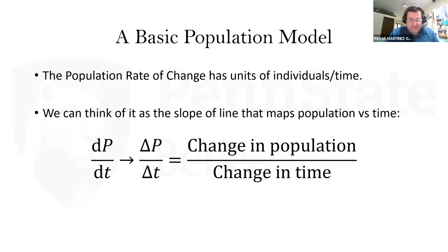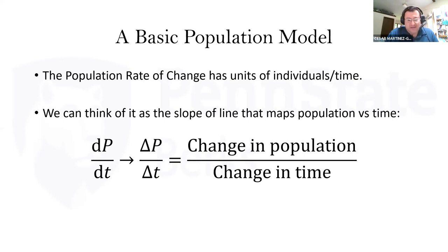This rate of change can be thought of as the slope of a line — like rise over run, delta y over delta x. We have the change in population over the change in time. So the change in population over the change in time gives us a rate of change.